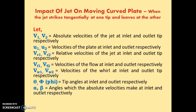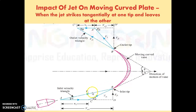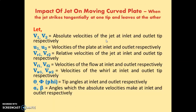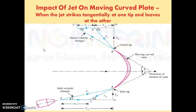Now these are some abbreviations. V1 and V2 — V1 is the absolute velocity of the jet at the inlet tip and V2 is the absolute velocity of the jet at the inlet and outlet tip respectively. Next are U1 and U2 — the velocity of the plate at inlet and outlet tip respectively.